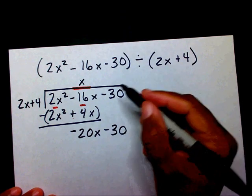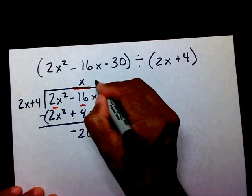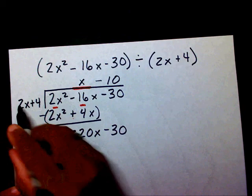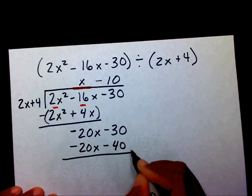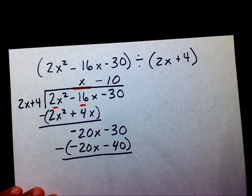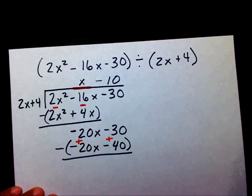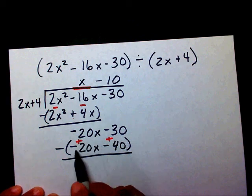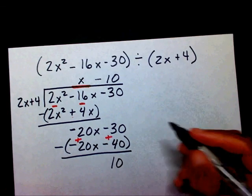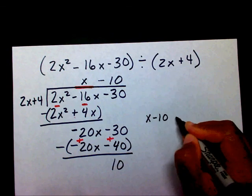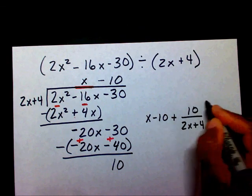Now I need to know what number times 2x will give me negative 20x — that's going to be negative 10. Negative 10 times 2x is negative 20x, and negative 10 times 4 is negative 40. I'm going to subtract this entire binomial, so this negative will become a positive. Negative 20x plus 20x — they cancel each other out. And negative 30 plus 40 is 10. So my final answer is x minus 10 plus 10 over 2x plus 4.